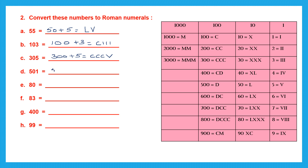Next is 501, which is 500 plus 1. 500 is D and 1 is I, so 501 is DI. Then 80 is 50 plus 30 — 50 is L and 30 is XXX, so 80 is LXXX. For 83, that is 50 plus 30 plus 3 — so L, XXX, and III, giving LXXXIII.